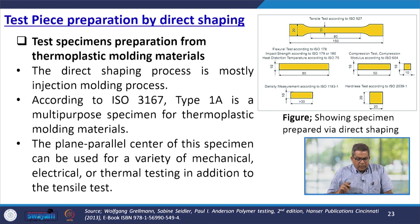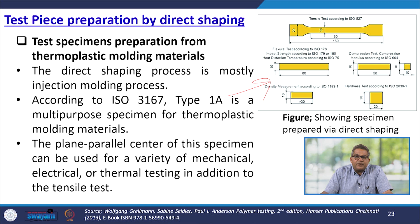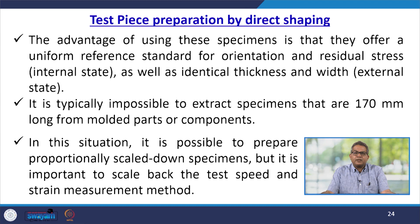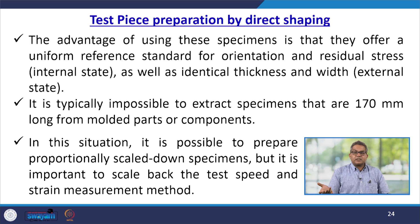For preparation by direct shaping of thermoplastic molding materials, the direct shaping process is mostly used via injection molding. As per ISO, the Type 1 multipurpose specimen for thermoplastic molding material — a plain parallel center specimen — can be used for a variety of mechanical, electrical, or thermal testing in addition to the tensile test. These specimens offer a uniform reference standard for orientation and residual stress as well as identical thickness. Where it is typically impossible to extract specimens 170 mm long from molded parts, it is possible to prepare proportionally scaled-down specimens, but the test speed and strain measurement must also be scaled back accordingly.